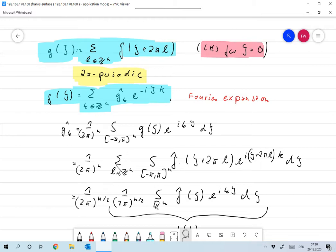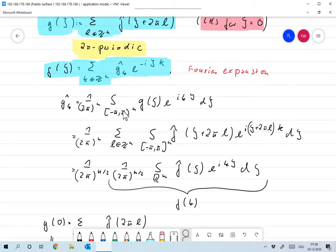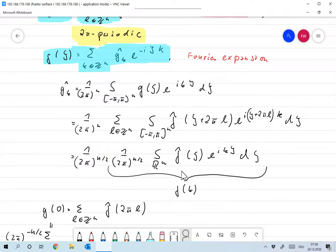Now we plug in the definition of g, and this is nothing but 1 over 2π to the N, sum over all L. I already took this over here, so it's actually just the integral of minus π to π to the N, sum over all L which I already took out, f hat of ξ plus 2πL. So that's exactly the definition of g. And in the exponent over here, I add to the ξ a 2πL, which does not make any difference because k is integer, and e to the i2πLk is just 1. So this was just inserting the definition of g. Now let's look at what we really have here. I set ξ equal to ξ plus 2πL. Then you find that, what are we actually integrating here? Well, we're integrating over minus π to π, then we're integrating from π to 3π, and so on.